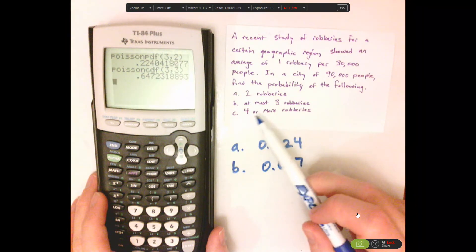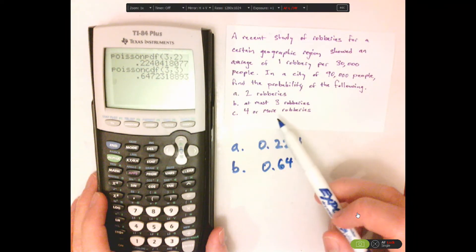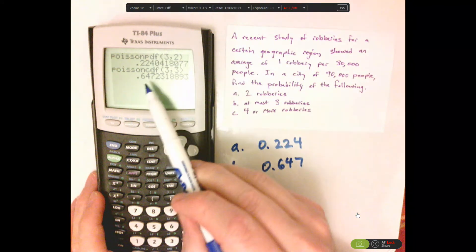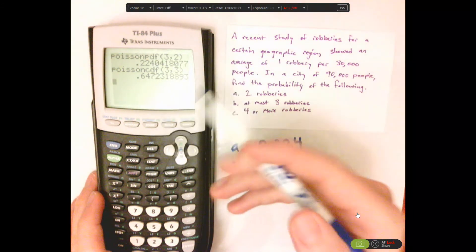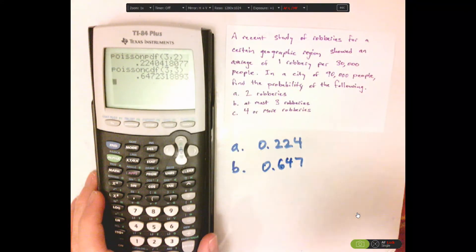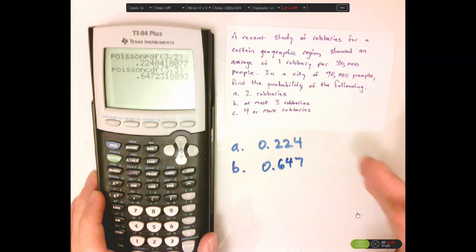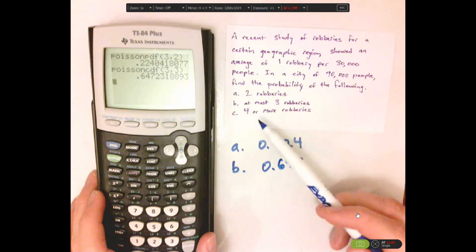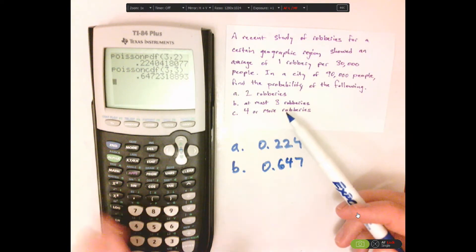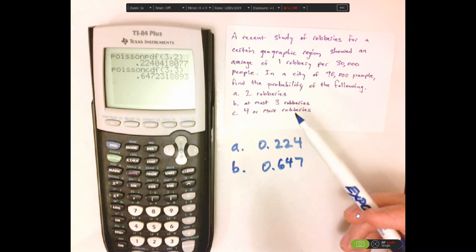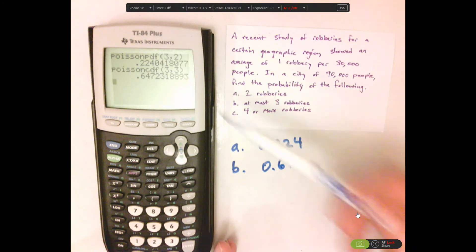Now, this last one says four or more. So when you do cumulative distribution function, it's cumulative. It's adding them up. And what it's adding up is 0, 1, 2, 3, all those different individual probabilities. So if I want the opposite, because it always does whatever the value is and below, if I want the opposite, I could take this probability and subtract it from 1.